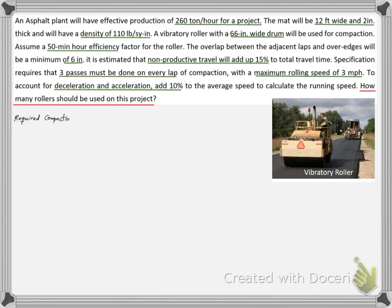We start by calculating the overall required compaction width, RCW, by adding the over edge extensions to the pavement width.